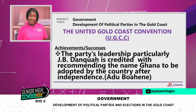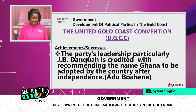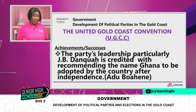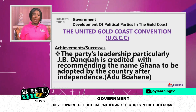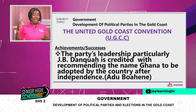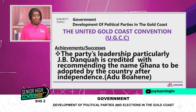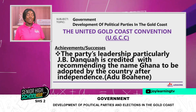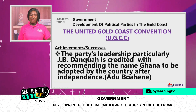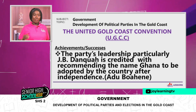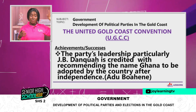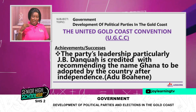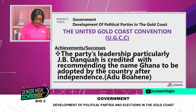The party's leadership, particularly Joseph Boateng Danquah, is credited with recommending the name Ghana to be adopted by the country after independence. According to Adu Boahen, during some of their meetings, J.B. Danquah had come out with the name Ghana to replace the Gold Coast after independence, so it wouldn't remind people of the suffering and discrimination they had gone through at the hands of the British, looking at how prosperous the old Ghana Empire had been.